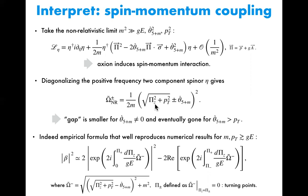Once you turn on a non-zero theta-dot, the gap size becomes smaller and smaller. If theta-dot is larger than P_T, the gap is eventually gone. So if the gap is gone, we expect the suppression factor to also be gone — and that is exactly what we saw in the numerical results. In other words, the spin-momentum interaction can compensate the suppression factor coming from the transverse momentum.